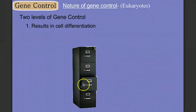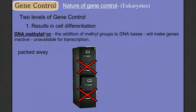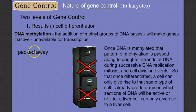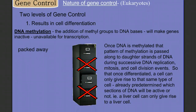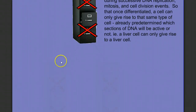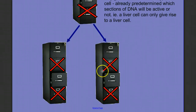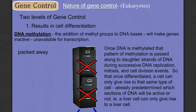Think of it like a filing cabinet where all our genes reside in different drawers, and not every drawer is available to open. One specific type of DNA packing is called DNA methylation — when methyl groups are added to DNA bases, it makes genes inactive or unavailable for transcription. Once genes get packed away and these drawers get locked down, any cells that come from this cell will have the same pattern of methylation. So if this filing cabinet were to reproduce, the copies would already have the same pattern of locked and open drawers.